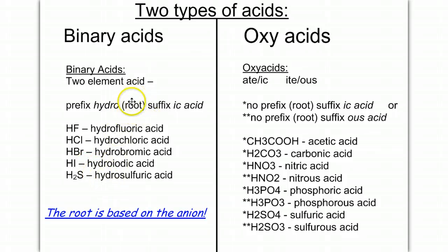Then we're going to determine the root of the name. In this case, it's fluor, here's chlor, here it's brome, here it's iode, and here it is sulfur. And then we're going to end them all with a suffix of ic acid. So here we have ic acid on the ends or as the suffix for each of these names.